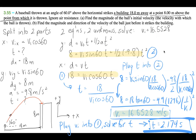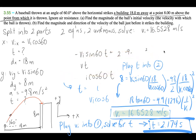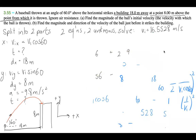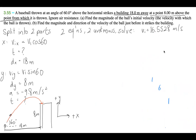Now let's solve for part B. We want the final velocity — the magnitude and direction just before the ball strikes the building. I'll erase and start fresh. For part B, vf = ? And we have t = 2.174 seconds from part A.